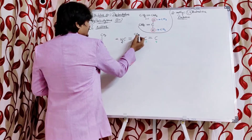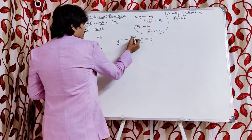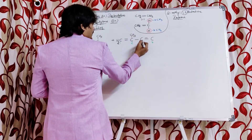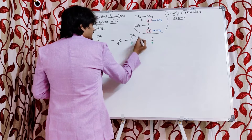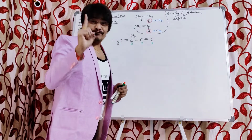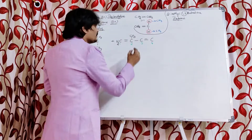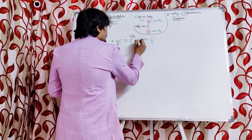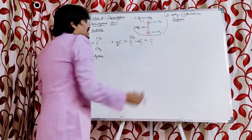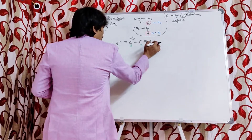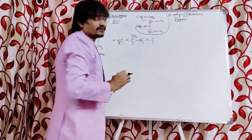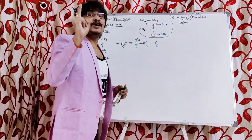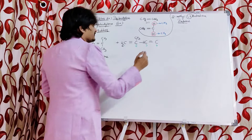The methyl group at carbon 2 has 3 hydrogens and 1 bond — valency satisfied. Carbon 3 has 3 bonds, so it is lacking 1 bond — place 1 hydrogen. Carbon 4 has only 2 bonds, so it is lacking 2 bonds — place 2 hydrogens. We have now obtained the complete structure of isoprene.